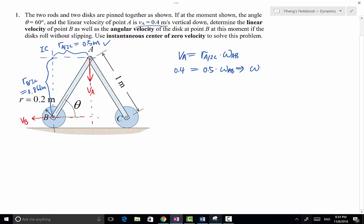From here we can solve for omega AB to be 0.4 divided by 0.5, and that is 0.8 radian per second. The direction is determined manually, because VA goes down and VB goes to the left, therefore you can tell that the rotation of this member is clockwise.